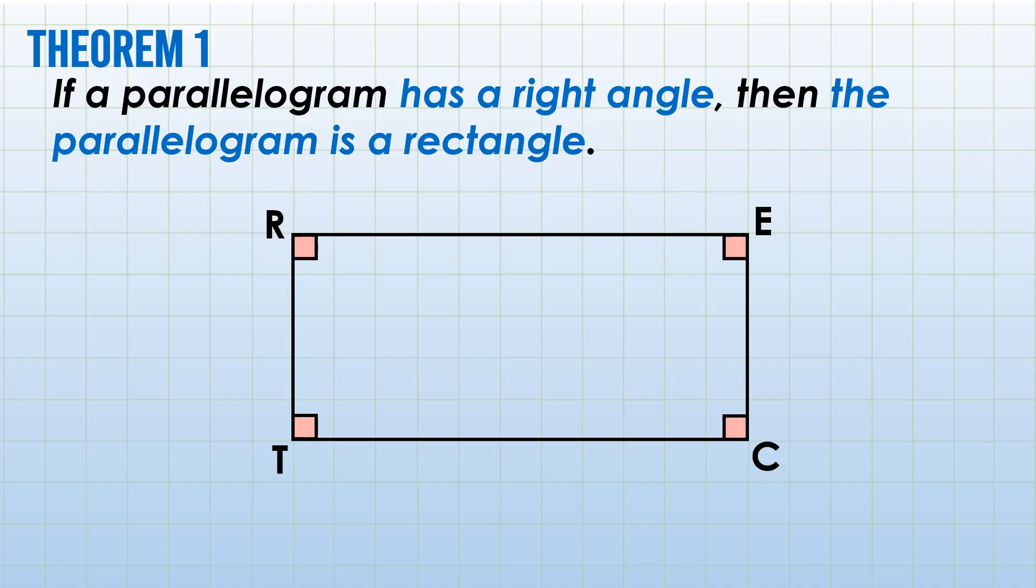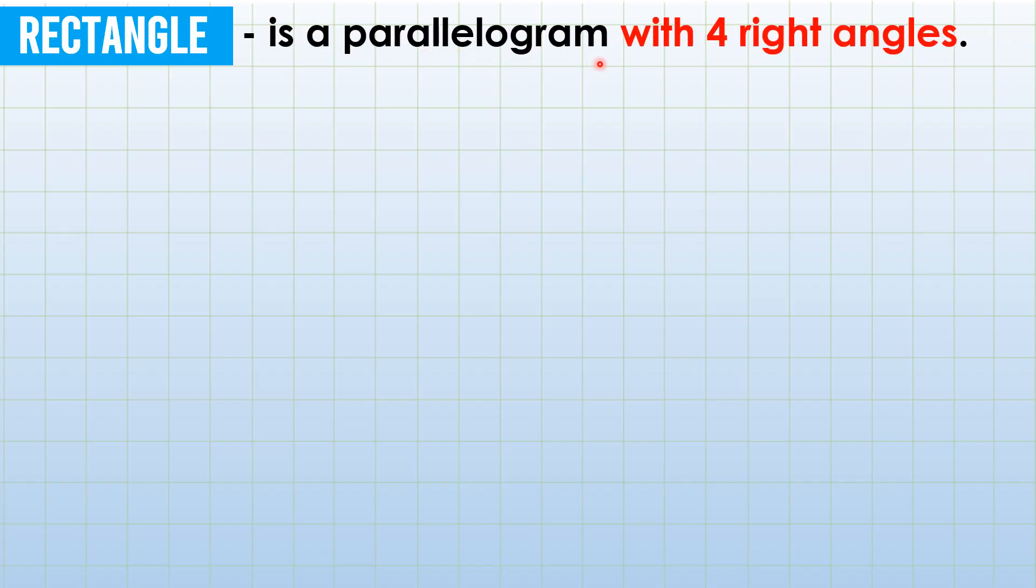And of course, the remaining angle—opposite angles are congruent—is also 90 degrees. So, when you add those four angles, you get 360 degrees. Now, let's define what a rectangle is: a rectangle is a parallelogram with four right angles.